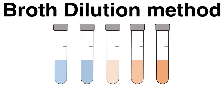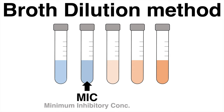The broth dilution method is one of the most commonly used techniques in microbiology to determine the MIC, the Minimum Inhibitory Concentration. How the assay works and what the definition of the MIC is will be explained in a second.